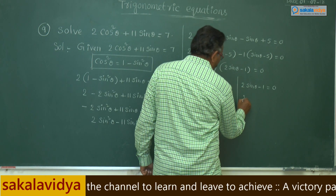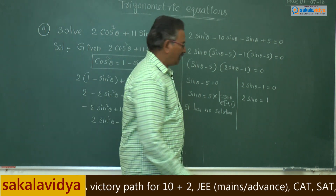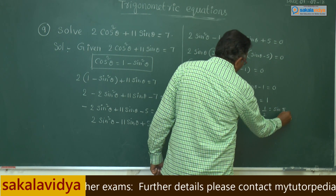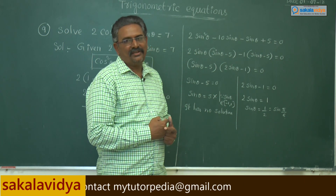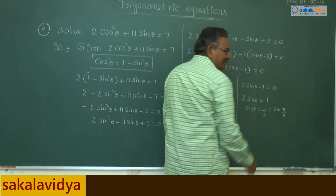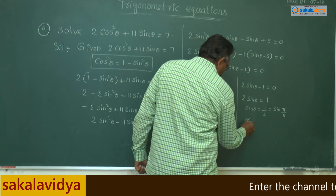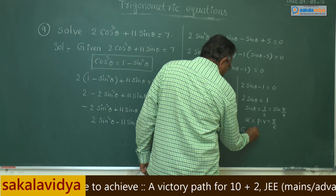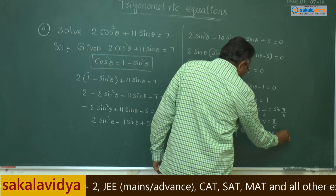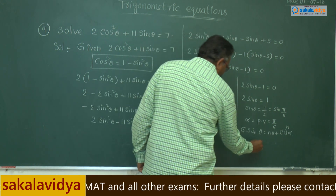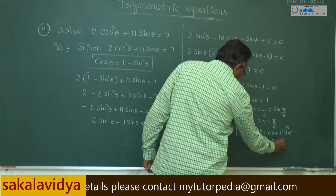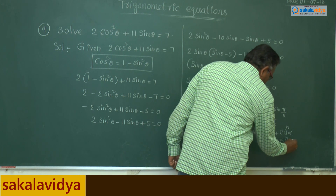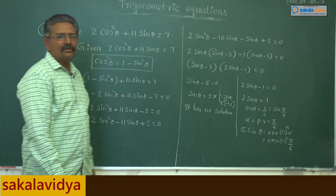Case 2: 2sinθ - 1 = 0 gives sinθ = 1/2, which equals sin(π/6), so this is solvable. The principal value is α = π/6. The general solution is θ = nπ + (-1)ⁿ · α, therefore θ = nπ + (-1)ⁿ · (π/6), where n belongs to ℤ. This is the final answer.